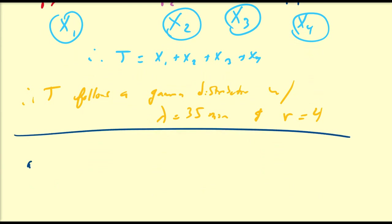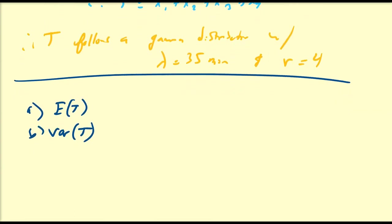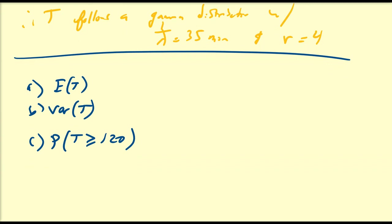We can ask: what is the expected wait time for us, the fifth person? What is the variance — if it's too large, we might not want to wait. What is the probability we wait more than 120 minutes? And what is the probability we wait less than 40 minutes? Note: for an exponential random variable, lambda is not the average — 1 divided by lambda is. Let's go to Desmos to answer all these questions.